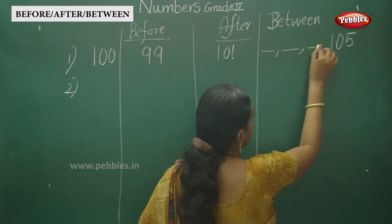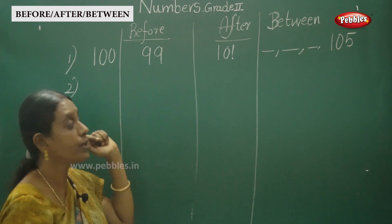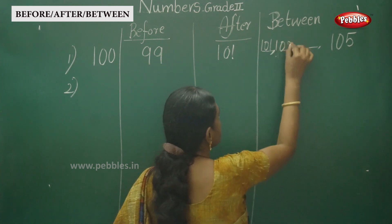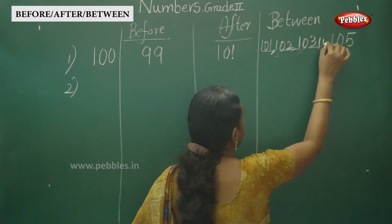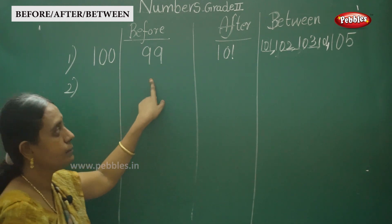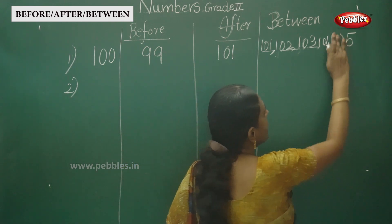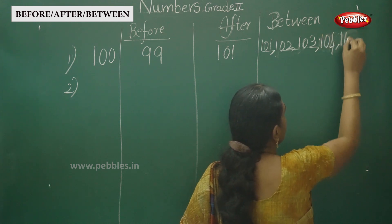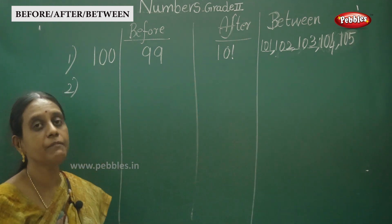This is the dash. Now we have 100 and 105. You can write the numbers between them: 101, 102, 103, and 104. So 101, 102, 103, 104 are the between numbers. Before is 99, after is 101, and the numbers between 100 and 105 go up to 104. This is the way to write between numbers.